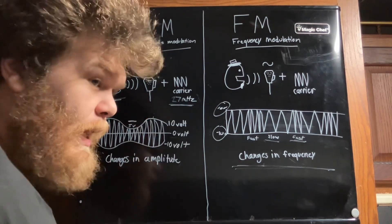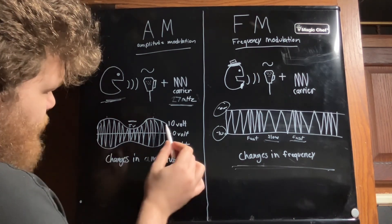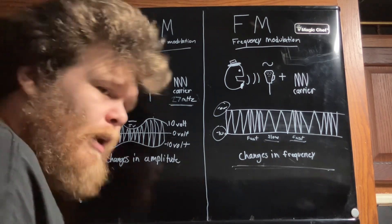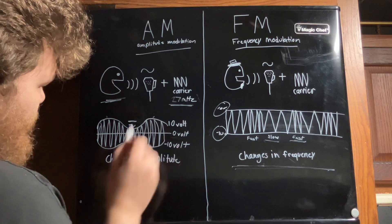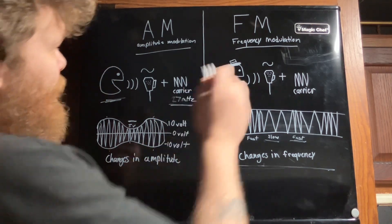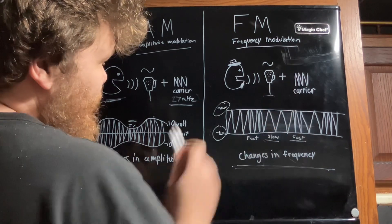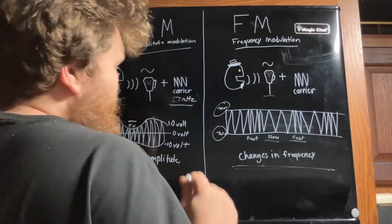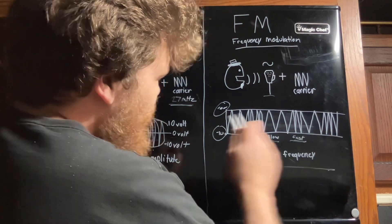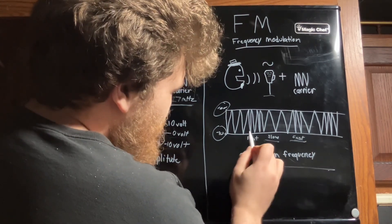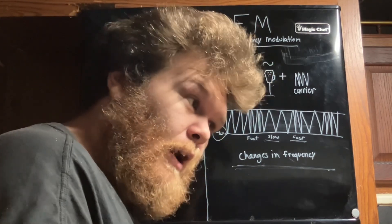Amplitude modulation works like this. We have Pac-Man here speaking into his microphone. His voice is mixed with a carrier from the radio at 27 megahertz, and what you get as a result is changes in amplitude. You can see here we have 10 volt, 0 volt, and negative 10 volt — arbitrary numbers — but there are changes in voltage. On the FM side, frequency modulation, things get weird: the voltage stays constant at 10 and negative 10 volts with no changes whatsoever. There are only changes in frequency — fast here, slow here, speed up here.